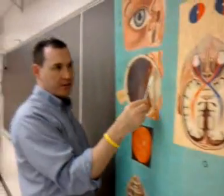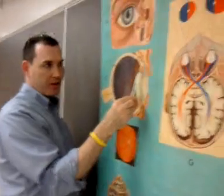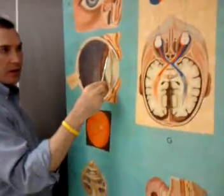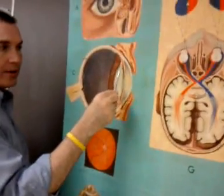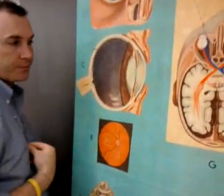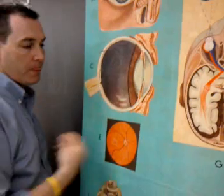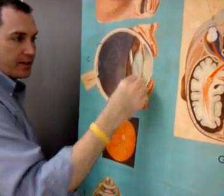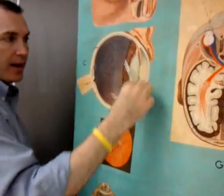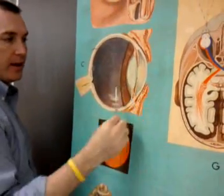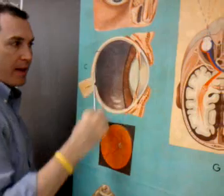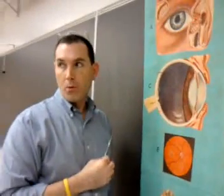Starting off on the inner side with these little suspensory ligaments, and working out to the ciliary muscles. As that image passes the ciliary body, it now is in the back chamber — the posterior chamber — where it encounters the important fluid, the vitreous humor.